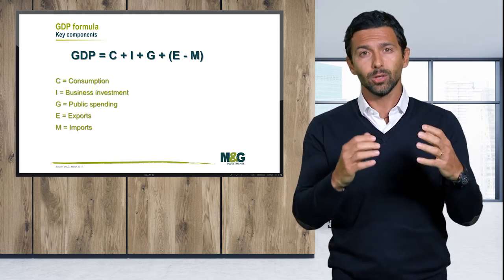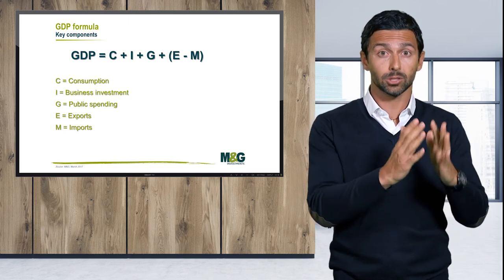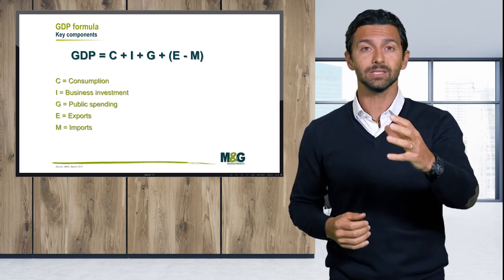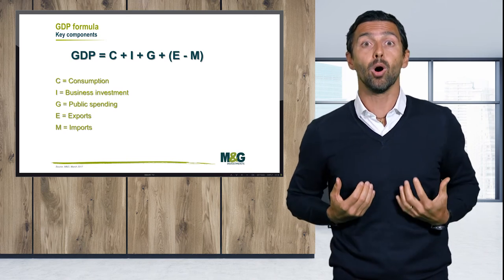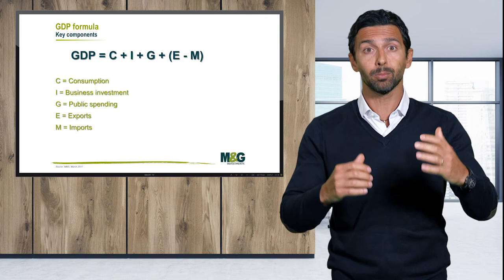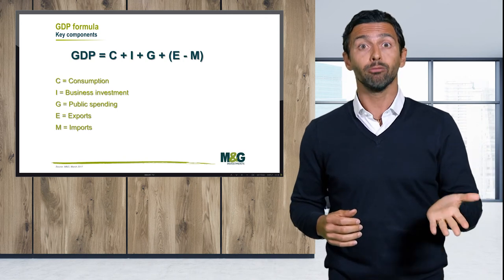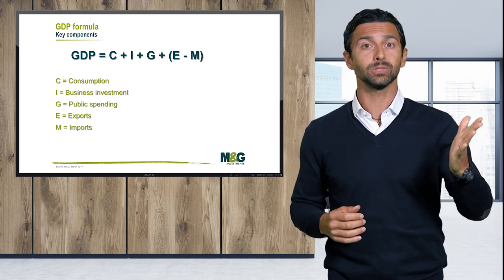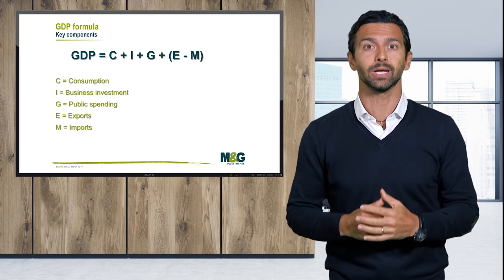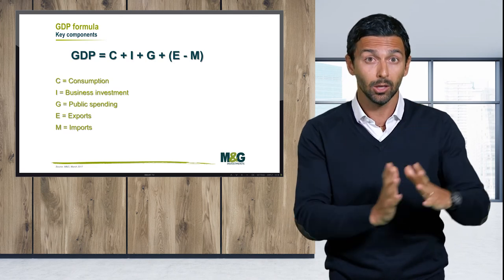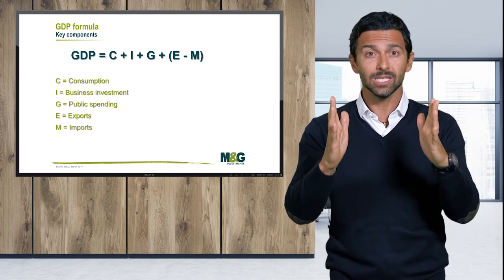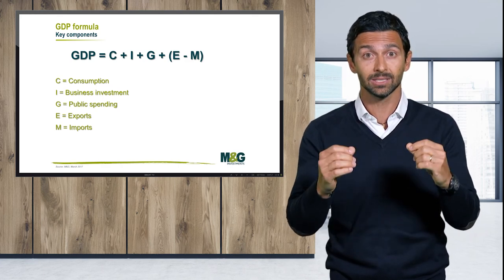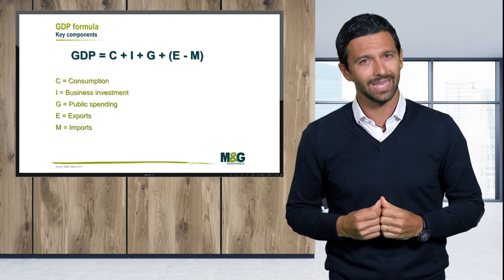When we have a current account surplus, it means the country is a net lender to the world. When we have a deficit, the country is a net borrower. In other words, a surplus means the country's foreign assets increase, while a deficit means net foreign assets are shrinking. This is very important to assess for both developed and emerging market economies. These are the five key families of macroeconomic indicators we use to assess how a certain economy is positioned.